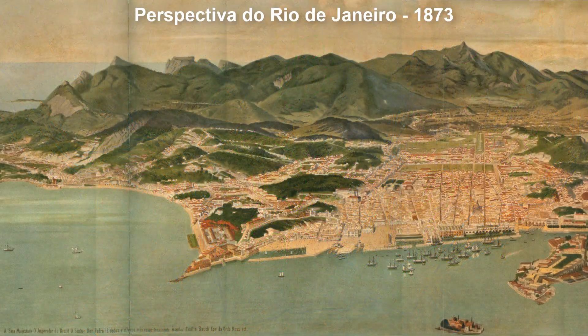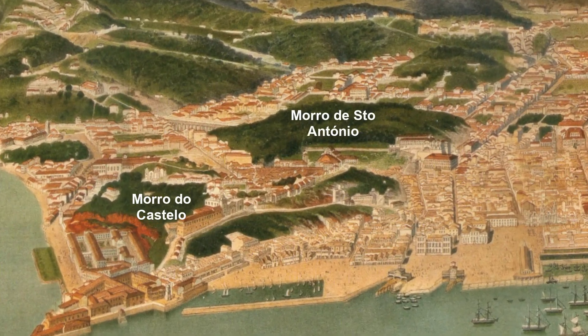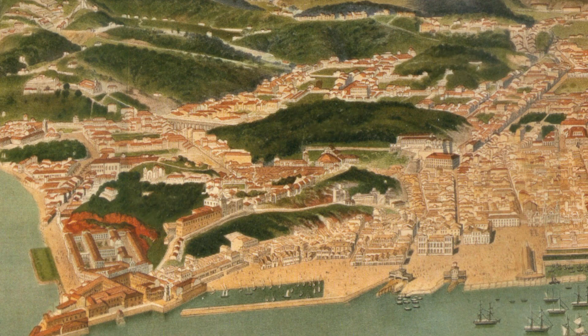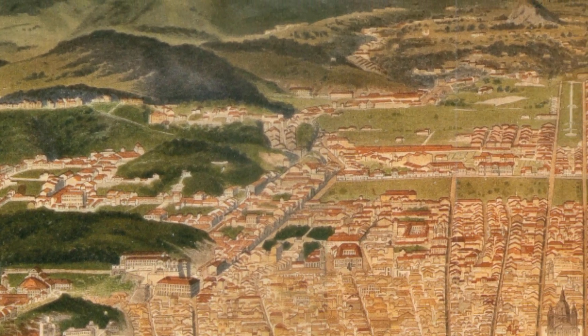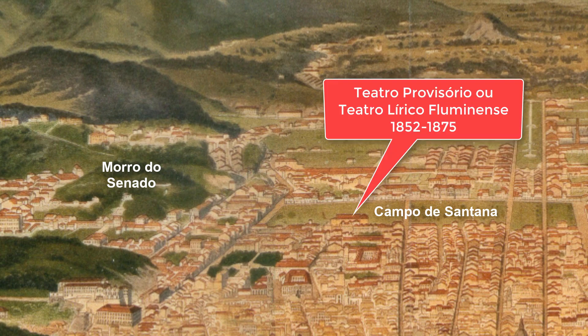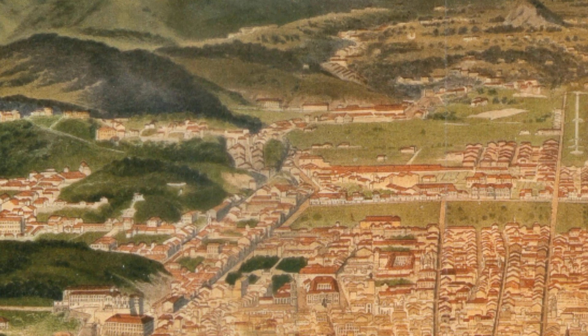Going back to the year 1873, we can see these three morros in perspective, with a focus on the Morro do Senado. In this view, we see the Morro do Senado, the Campo of Santana, the Teatro Provisório, the Praça da Constituição — or Praça Tiradentes — and the Morro of Santo Antônio.